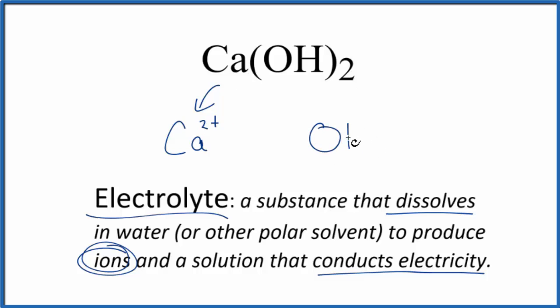And then the hydroxide ion, that's OH⁻, that has a one minus ionic charge. And we have two hydroxides. So for every one calcium ion, we get two hydroxide ions.